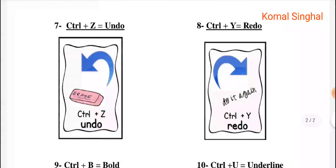Now the next shortcut key is Control plus Z, which means Undo. If we have made a mistake and want to erase or reverse it, we can use the shortcut key Control plus Z. The next shortcut key means Redo — Control plus Y — which redoes what was undone.